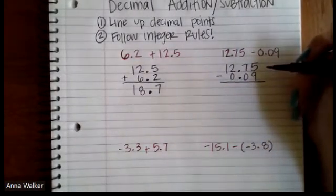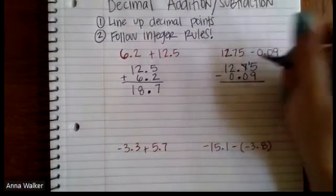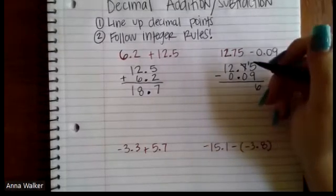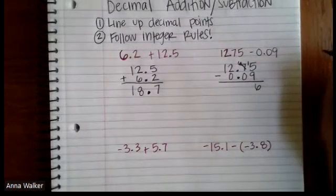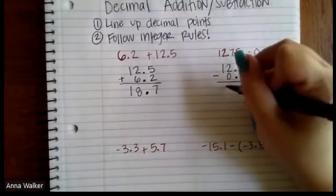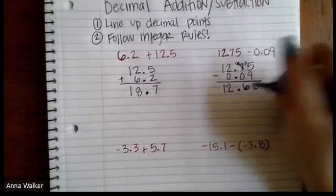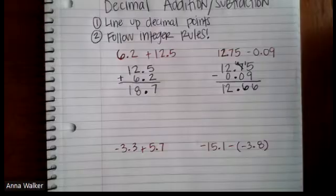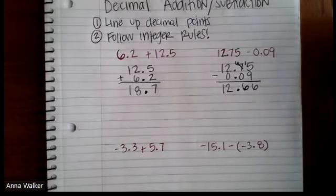We cannot subtract 5 from 9, so we have to borrow. So this becomes 15. Fifteen minus 9 is 6. This number over here, because we borrowed from 7, becomes 6. Six minus 0 is 6. And then 12 minus 0 is going to still remain 12. I'm going to keep the decimal point in the same spot. So 12.75 minus nine hundredths is going to be 12.66 or twelve and sixty-six hundredths.